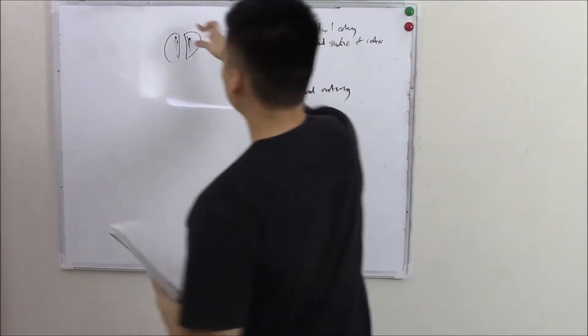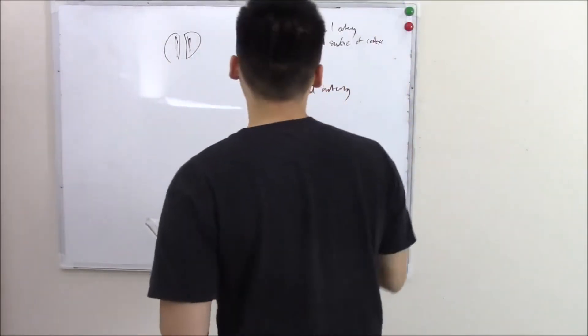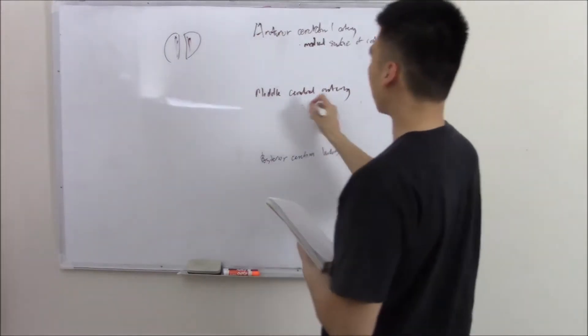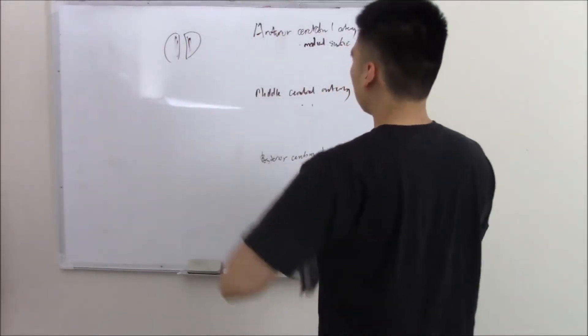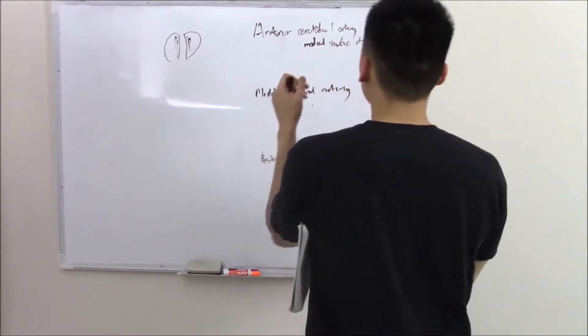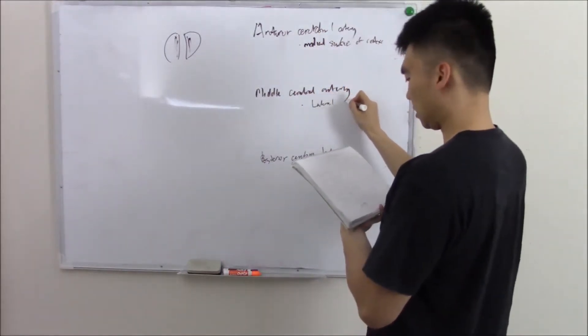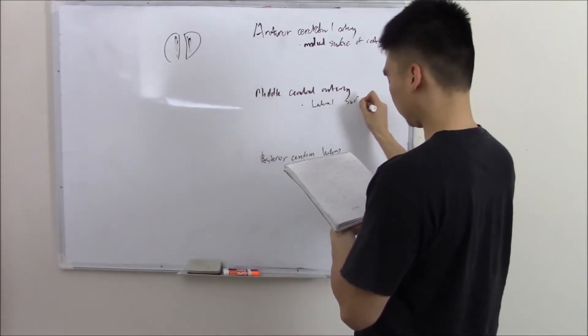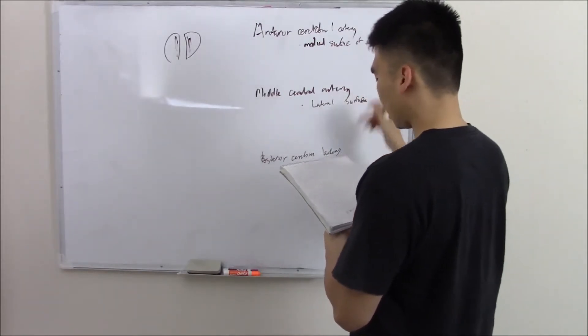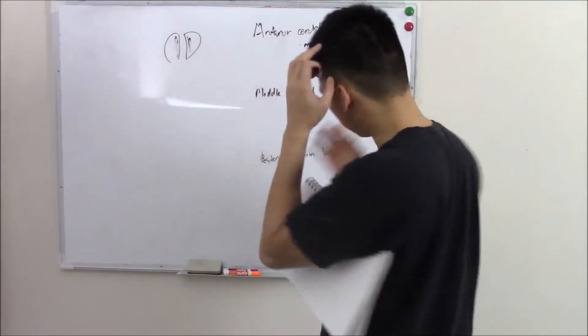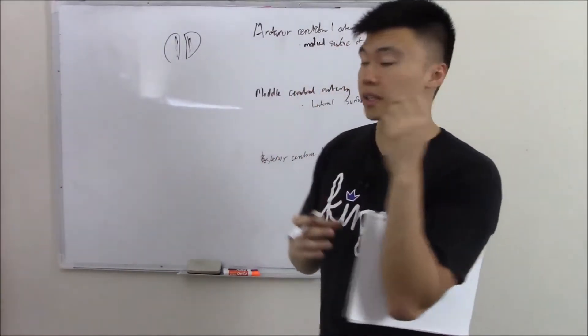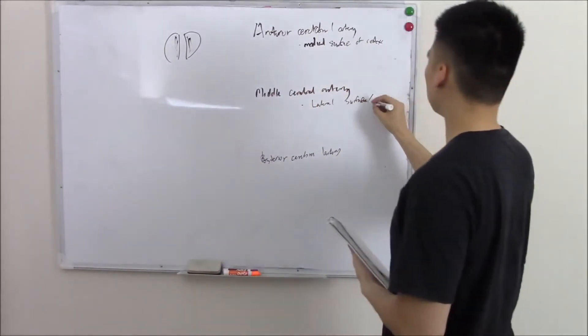How about the lateral side? How about out here? Well your middle cerebral artery will pick up that slack. So course through the lateral side, lateral surface. Don't forget the lateral surface also contains your Broca's area and your Wernicke's area. Broca and Wernicke.